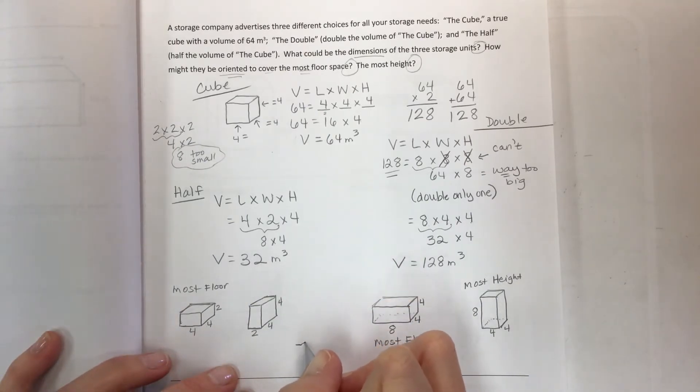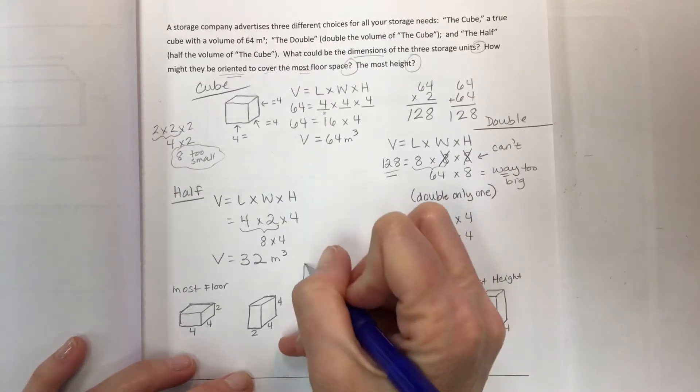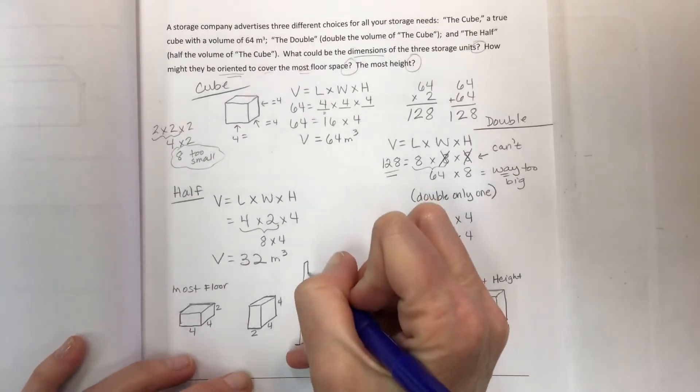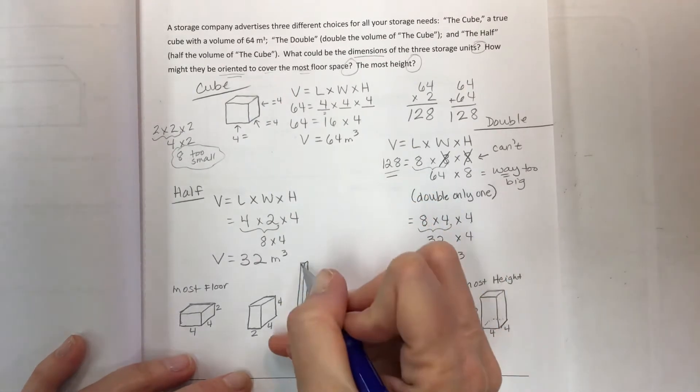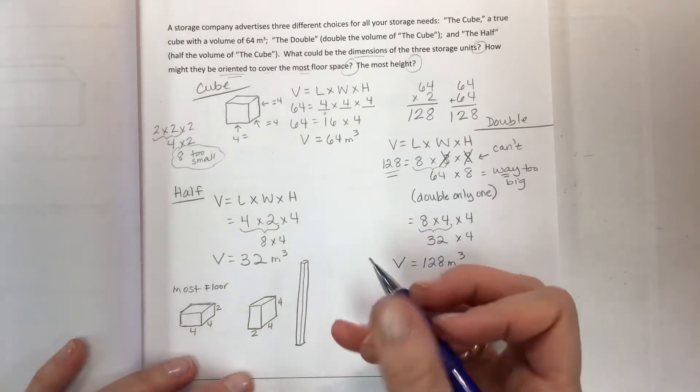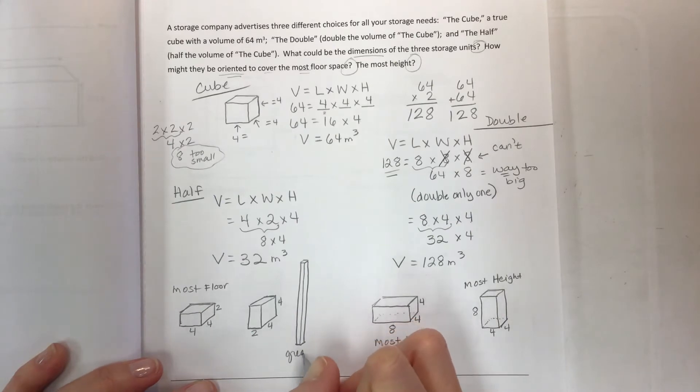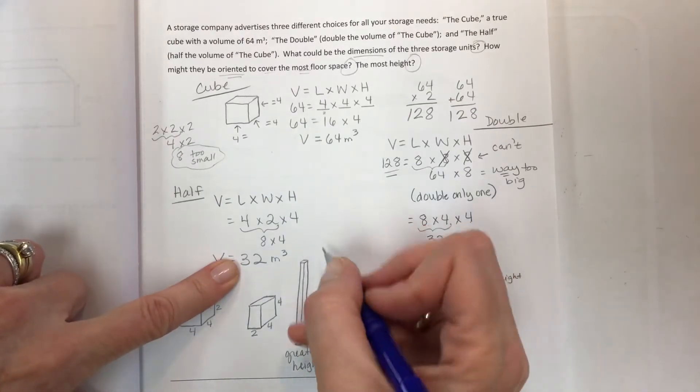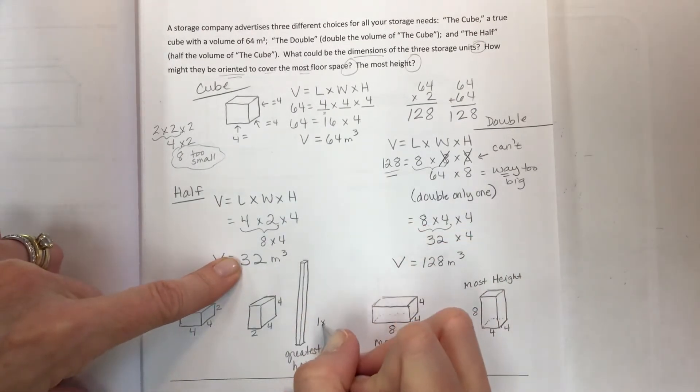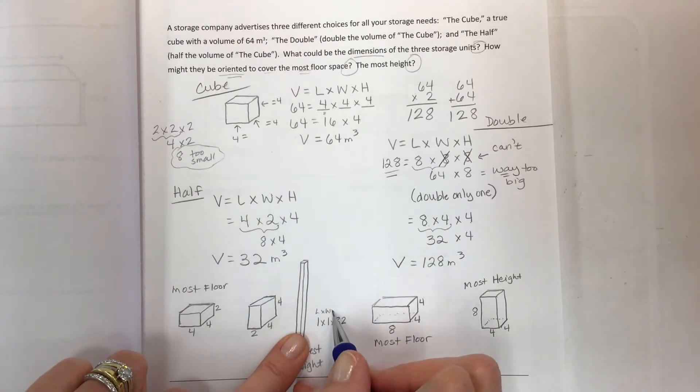And that is how you can actually get the greatest height. The greatest height would be using different dimensions where we still get 32. So it would be 1 by 1 by 32, and that's your length, width, and height.